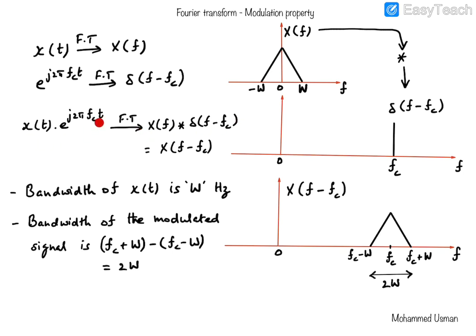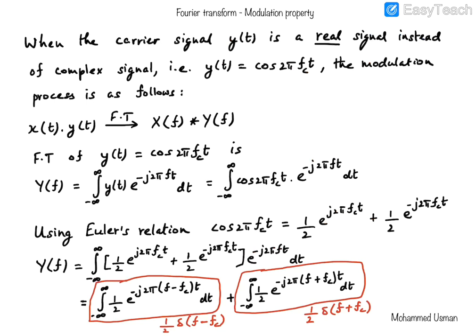The first property is that multiplication in the time domain is convolution in the frequency domain, and we also used the fact that the delta function is an identity for the convolution operation. However, in the real world when we perform modulation for communication purposes, we don't usually use a complex exponential carrier signal, but rather we use a real carrier signal. So what happens to the spectrum of the modulated signal when we use a real carrier signal? Let's consider the carrier signal Y(t) to be cosine(2πF_c·t), where F_c is the carrier frequency again.